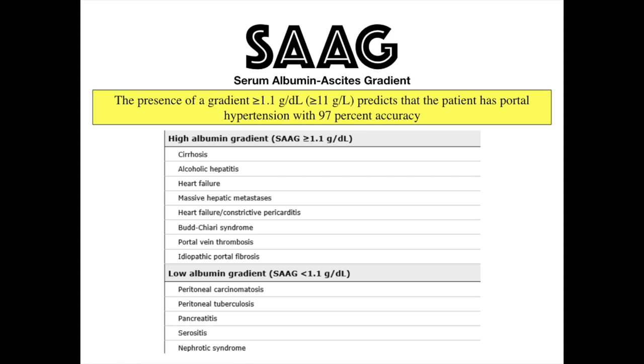Once you get the albumin from the ascites and the serum albumin, you can calculate the SAAG — the serum albumin to ascites gradient. Typically, if the gradient is greater than 1.1 g/dL, it is highly predictive that the patient has portal hypertension with 97% accuracy. You don't necessarily need to do this in patients with known established ascites, but for the new patient coming in it's a good idea to document this at least once in the record.